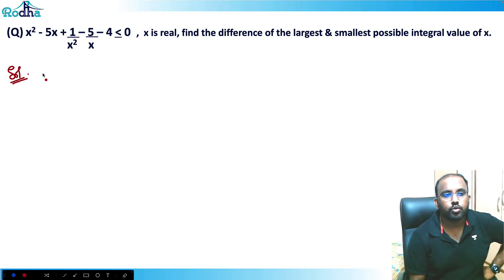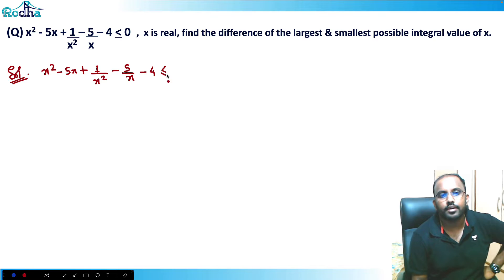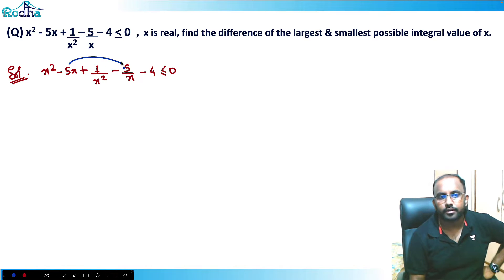It says that x² - 5x + 1/x² - 5/x - 4 is less than or equal to 0. Now how do you attack this question? You see that it is -5x and -5/x.